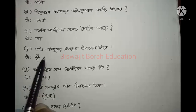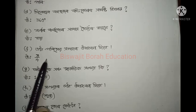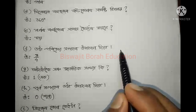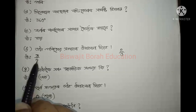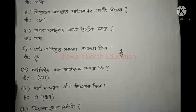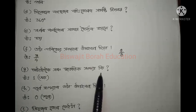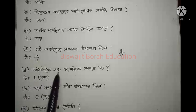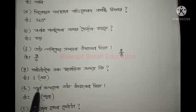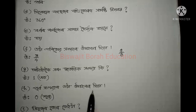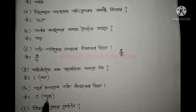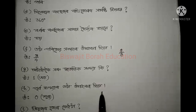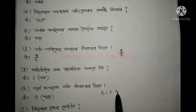Sub-part F: Give an example of a rational number — for example, 3 by 4. Sub-part G: Which numbers can be written in the form P by Q? Any number can be written in that form, but the denominator cannot be 0. For example, 2 by 0 is not a rational number. Sub-part H: Give an example of a whole number. The answer includes 0. Starting from 0: 0, 1, 2, 3 — these are whole numbers.